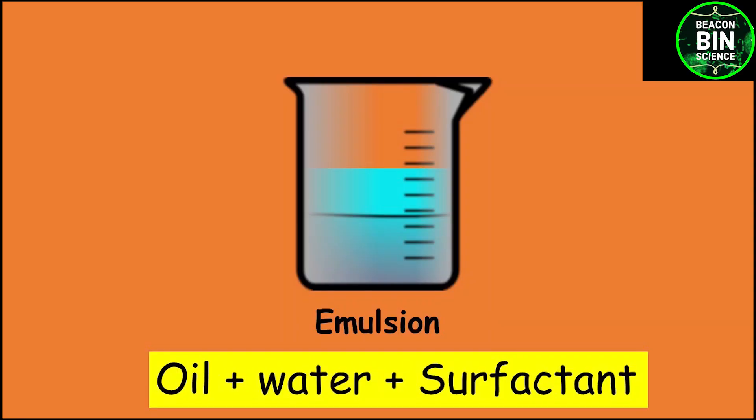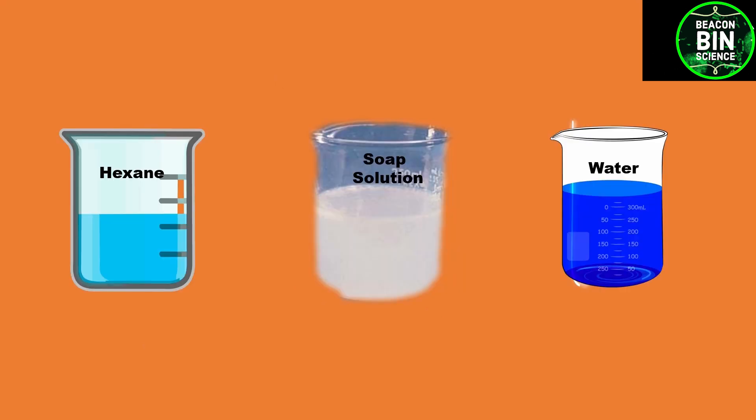Emulsion is a homogeneous solution of water, oil — which was hexane in our case — and surfactant.